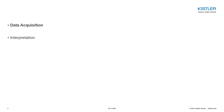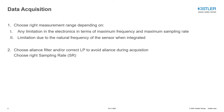Let's start with data acquisition. I have divided the presentation into two main topics. I will start with choosing the right measurement range, then introduce the effect of aliasing, how to utilize an anti-aliasing filter or correct low-pass filter to avoid aliasing, and then talk about how to choose the sampling rate.